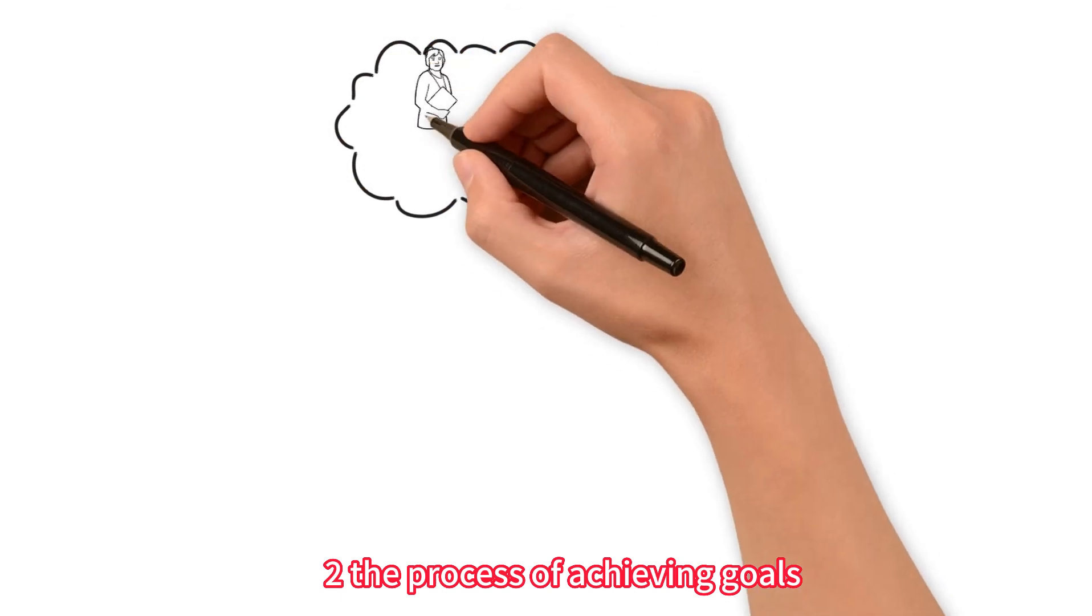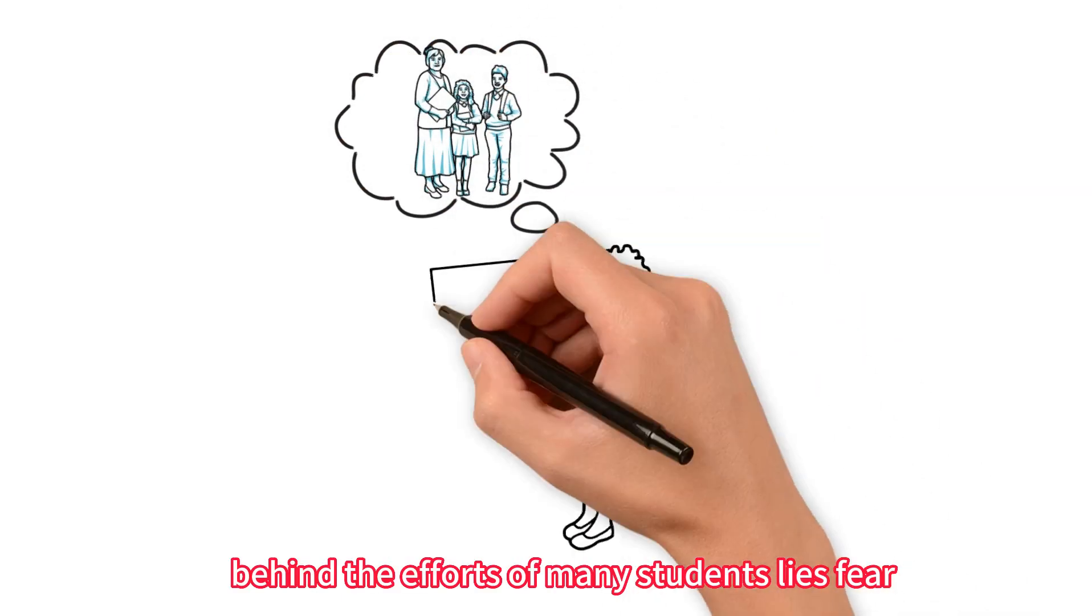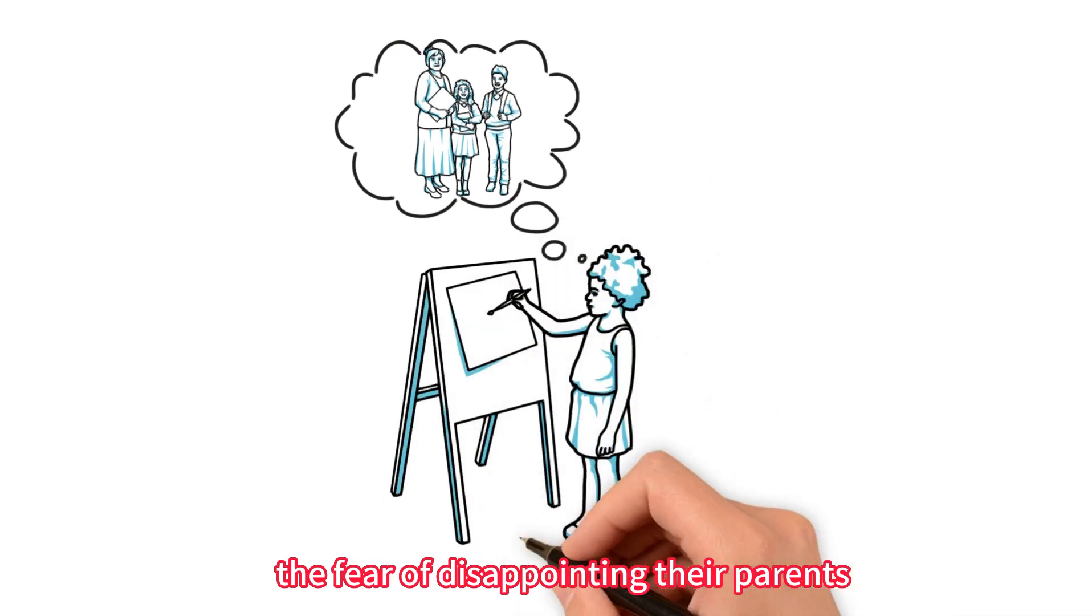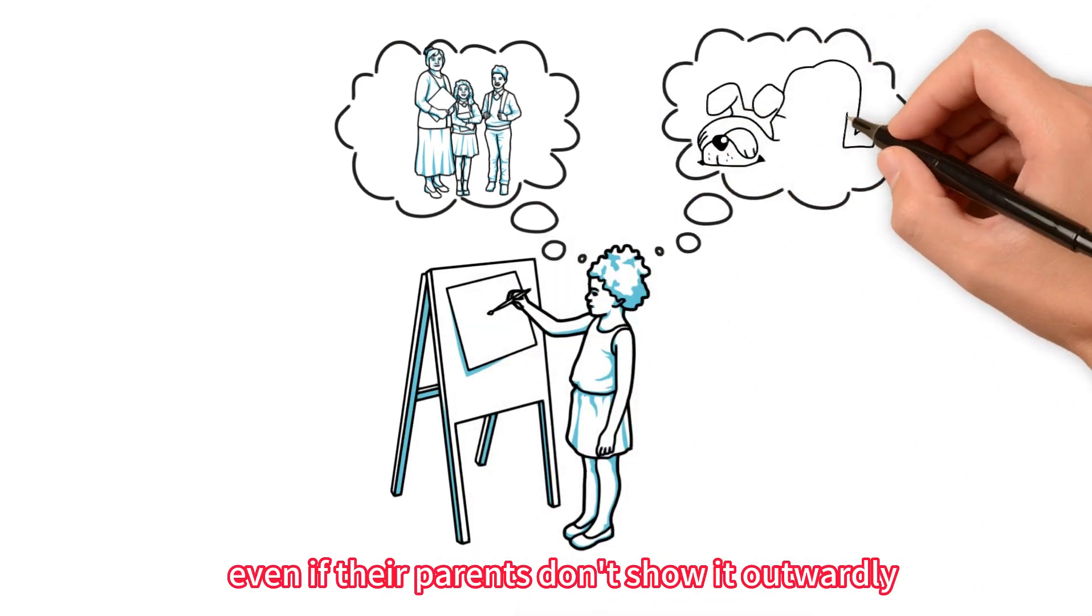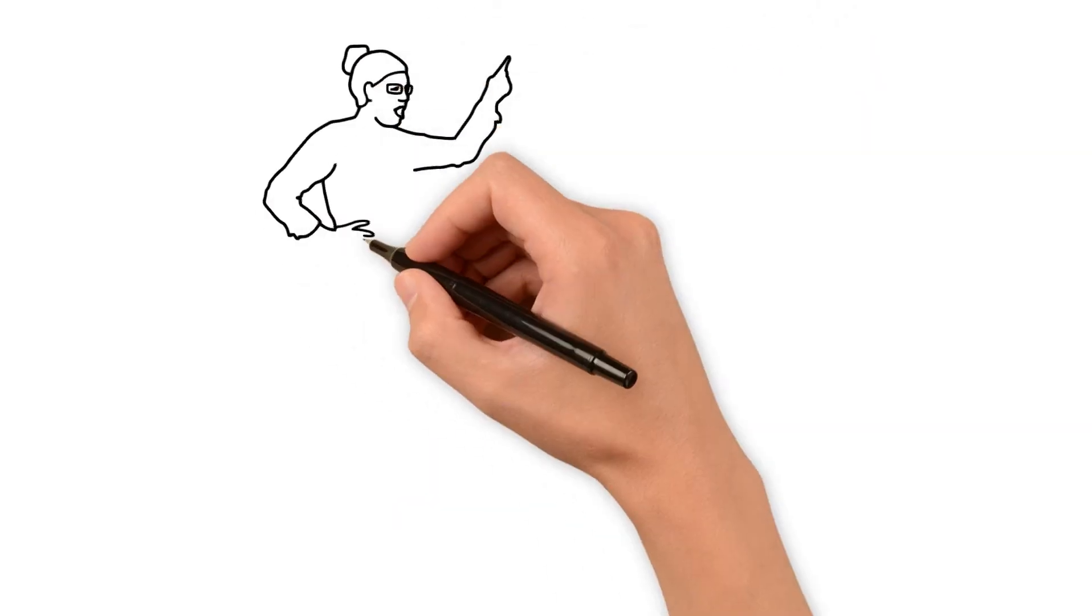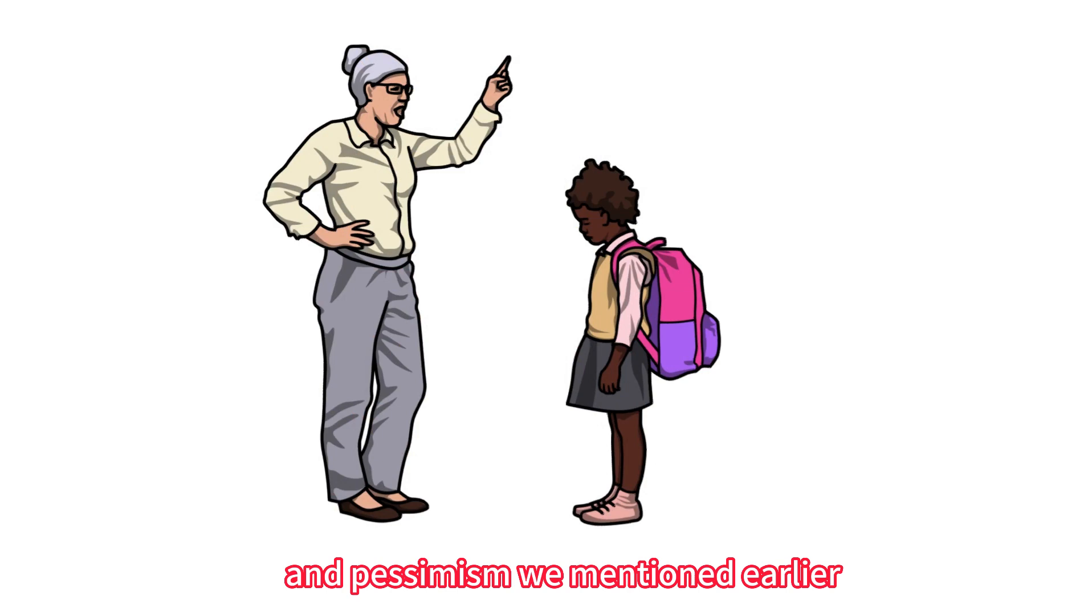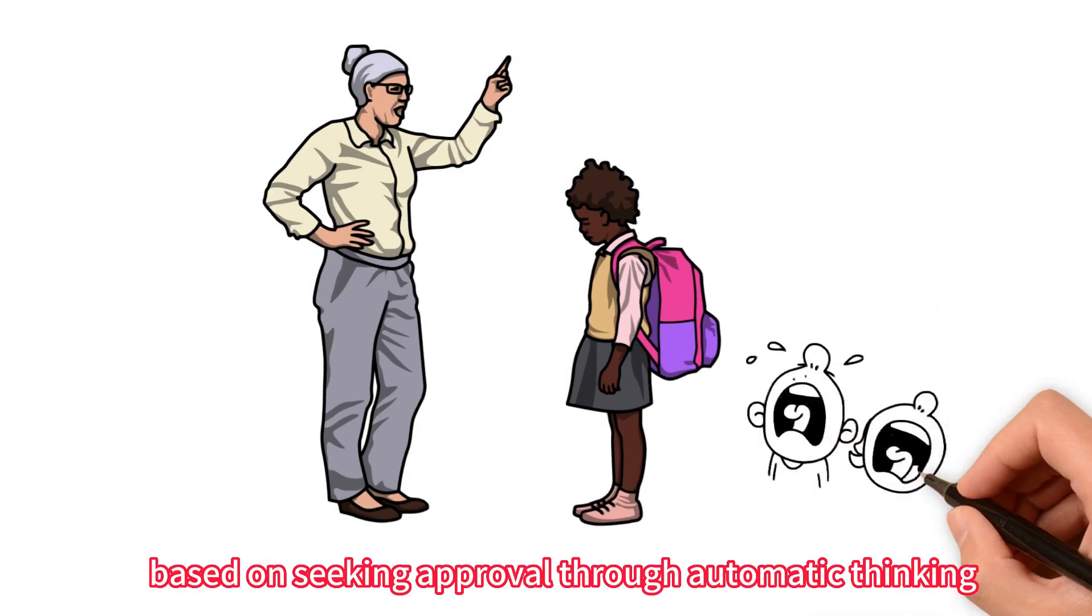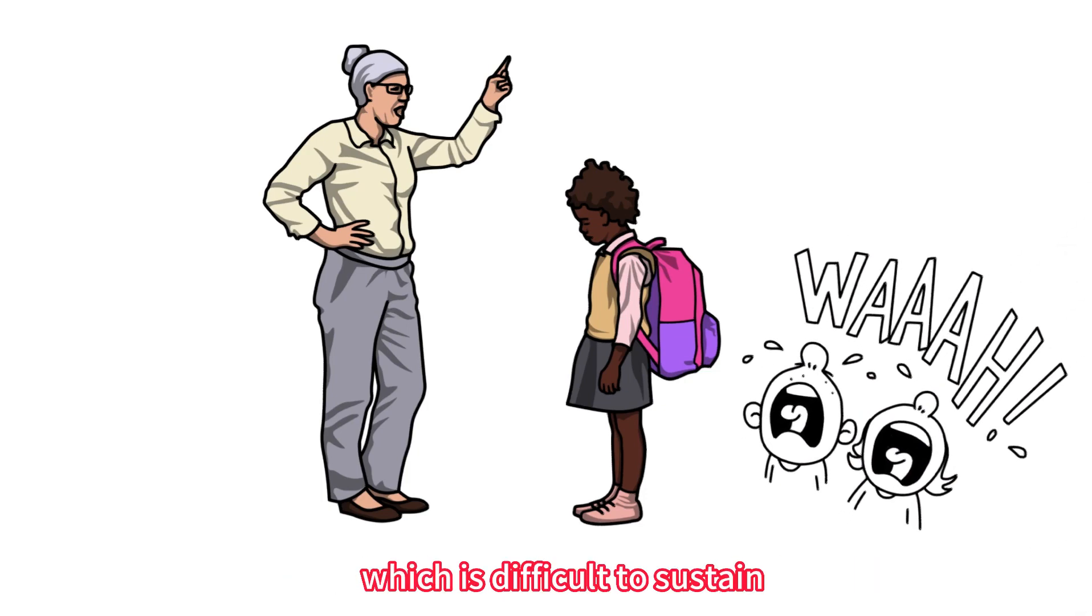2. The process of achieving goals is filled with trepidation and fear. Behind the efforts of many students lies fear, the fear of disappointing their parents if they don't perform well on exams, even if their parents don't show it outwardly. This type of parenting is no different from the direct criticism and pessimism we mentioned earlier. Therefore, education based on seeking approval through automatic thinking only leads to progress driven by fear, which is difficult to sustain.